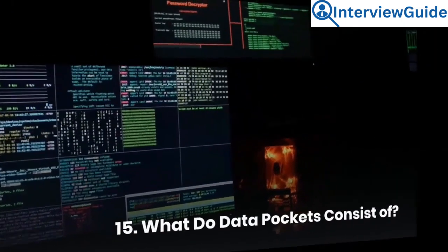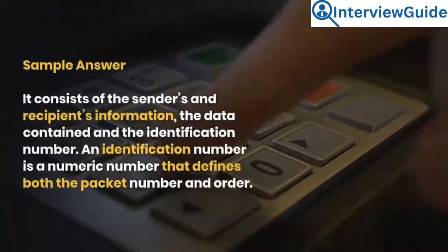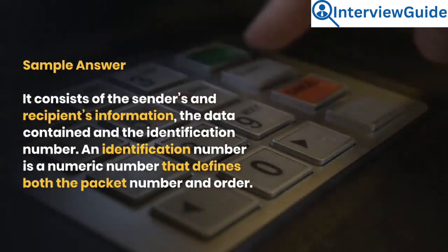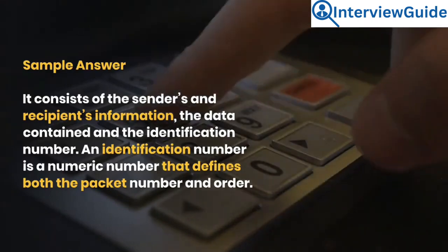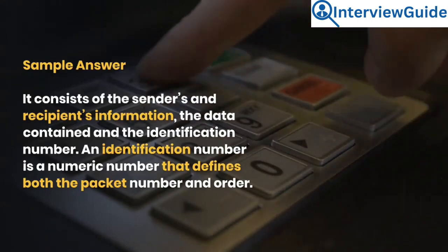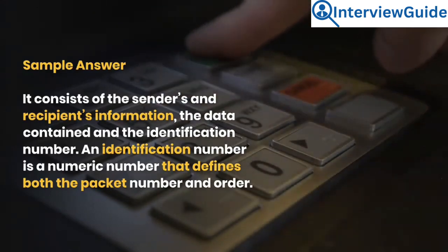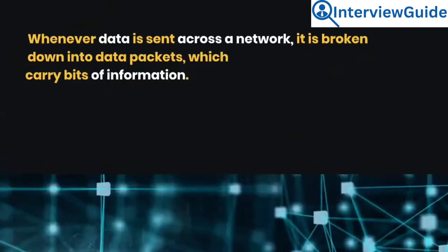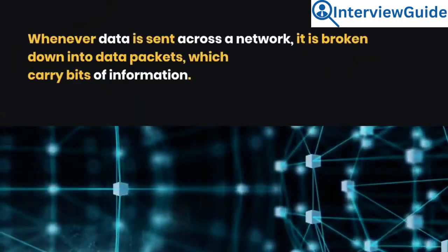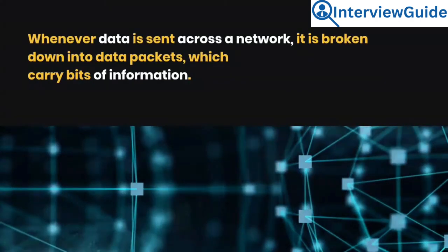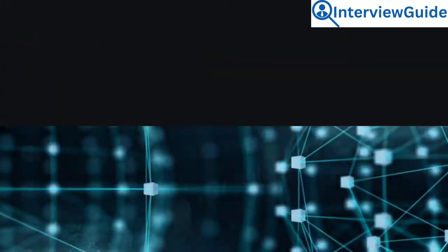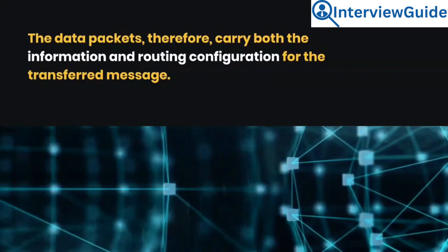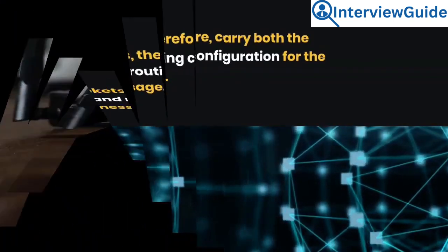Question 15: What do data packets consist of? A data packet is made up of four contents: the sender's and recipient's information, the data contained, and the identification number. An identification number is a numeric value that defines both the packet number and order. Whenever data is sent across a network, it is broken down into data packets which carry bits of information. The data packets therefore carry both the information and routing configuration for the transferred message.